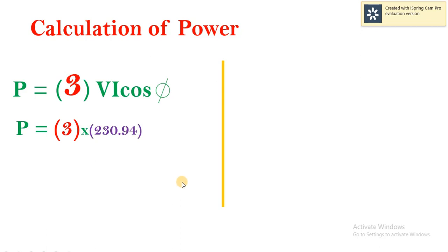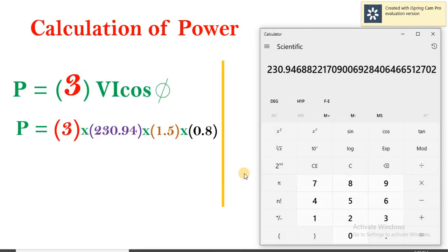For the sake of calculation, we are taking the value of voltage as 230.94, current as 1.5, and cos phi as 0.8. Therefore, on calculating this: 3 multiplied by 230.94 multiplied by 1.5 multiplied by 0.8, we get the answer as 831.3 watts.